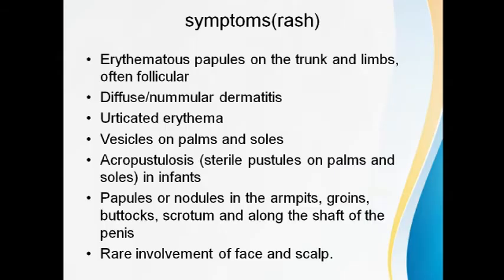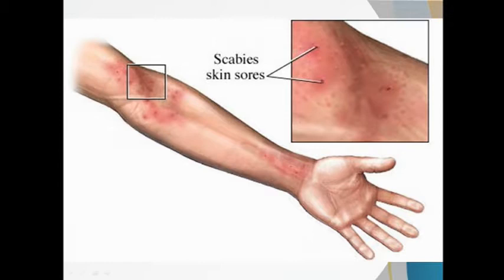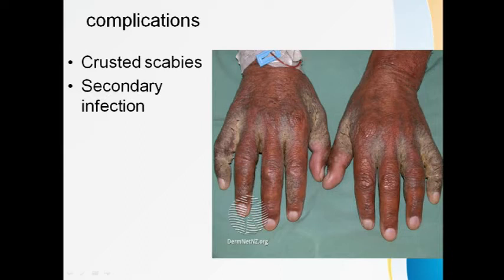At the end of the burrow track, one papule is present where the mite lies. A very characteristic and most common complication of scabies is crusted scabies. In this condition, there is thickening of skin folds with thickened plaques and white powdery crust material. This thickening and crusting is due to an exaggerated infestation of the scabies mite.